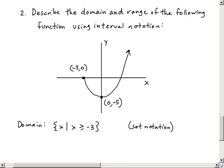But the directions asks us to specify this domain using interval notation. And so what we've got here is we're including negative 3, but we're going to infinity.